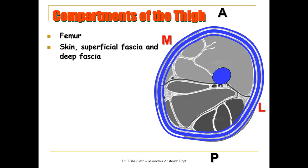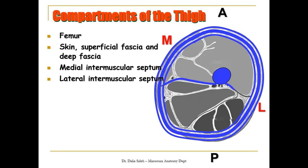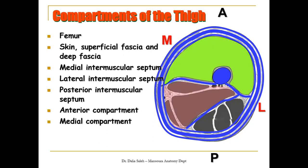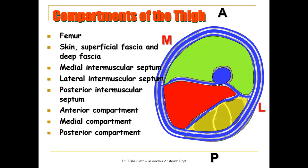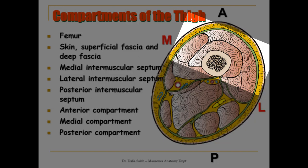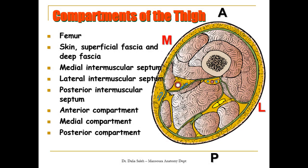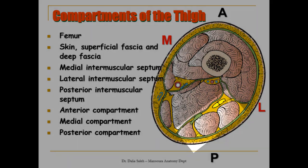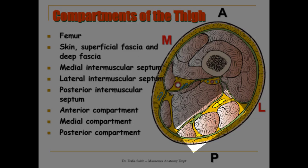Extending from this deep fascia to the back of the femur, we have the medial intermuscular septum, the lateral intermuscular septum, and the posterior intermuscular septum. These intermuscular septa, together with the femur, divide the thigh into three compartments: the anterior compartment containing the extensors of the knee joint supplied by the femoral nerve; the medial compartment containing the adductors of the thigh supplied by the obturator nerve; and the posterior compartment containing the flexors of the knee joint supplied by the sciatic nerve.